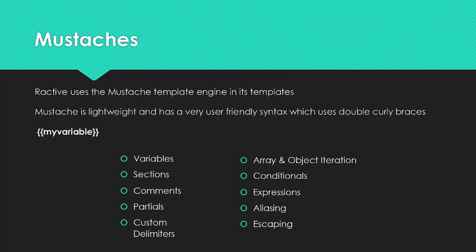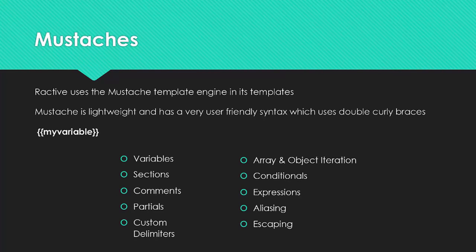Mustache is a templating engine and it is pretty lightweight. It has a very user-friendly syntax which uses double curly braces — a variable wrapped in double curly braces, which kind of look like mustaches. There's much more we can do with mustache than just create simple variables. We can break our templates up into sections and partials, combine templates, leave comments, create custom delimiters, loop through both arrays and objects, use conditionals like if, if-else, and unless, write expressions, create aliases, and escape characters. We'll be learning about all this as we progress.